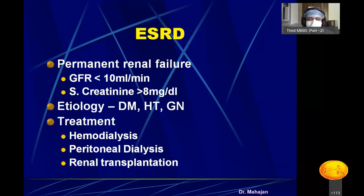The commonest etiology of end-stage renal disease is diabetes, hypertension, and glomerulonephritis. Diabetes and hypertension are usually seen in elder patients, and glomerulonephritis is usually seen in younger patients.